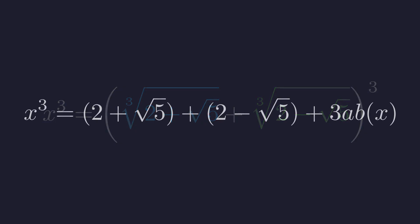So we get 2 plus root 5, then 2 minus root 5. And here's the cross term. 3 times a times b times our original x. Now watch carefully what happens to those first two terms.